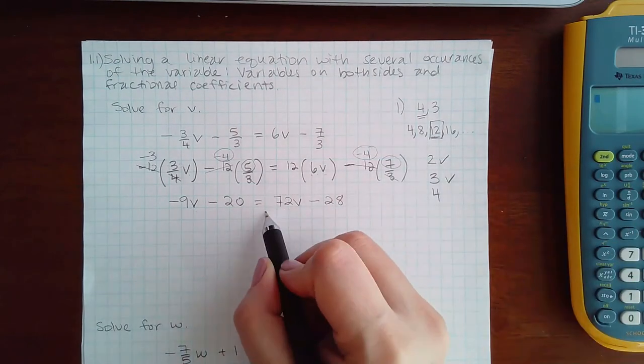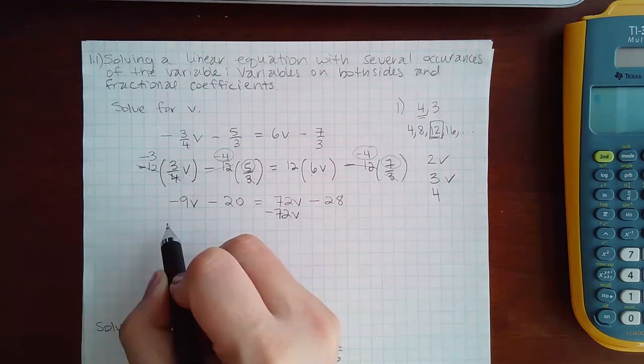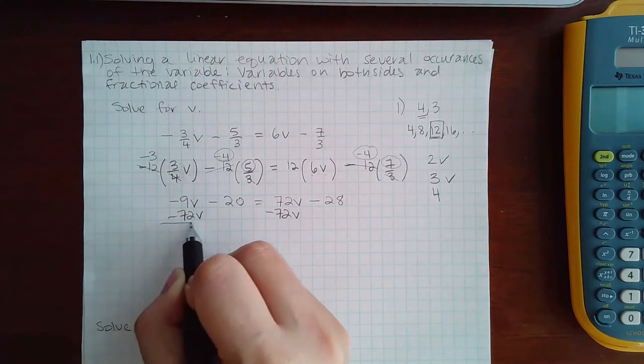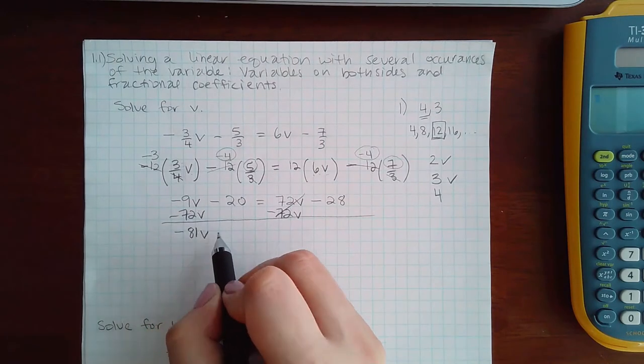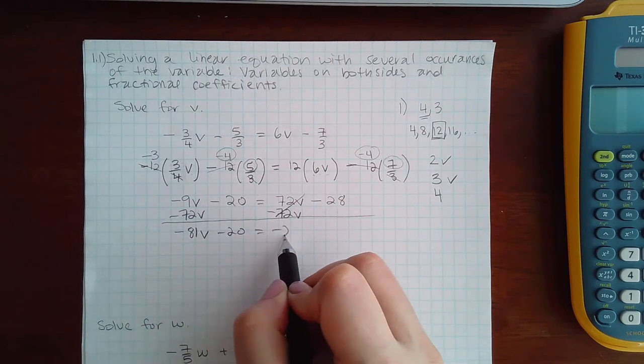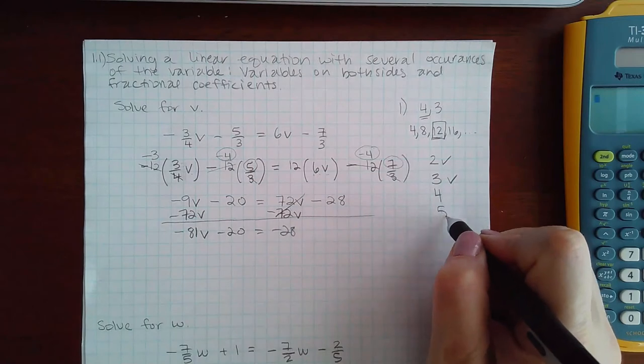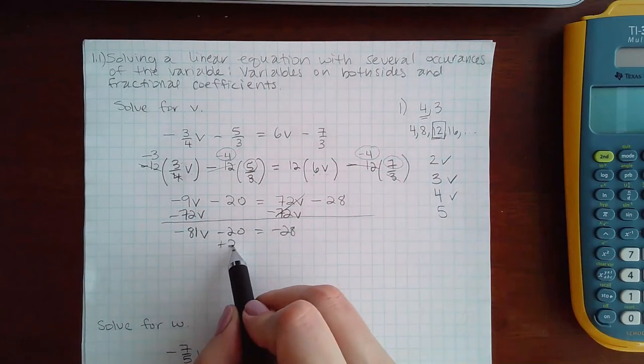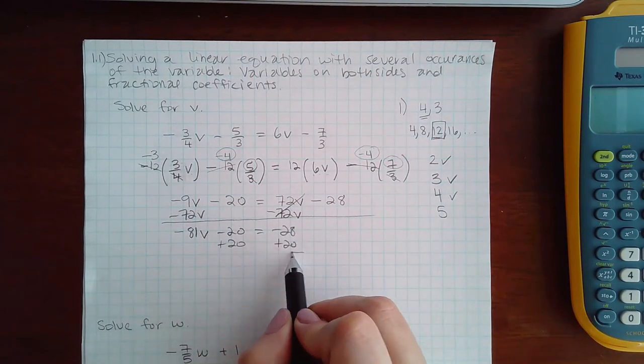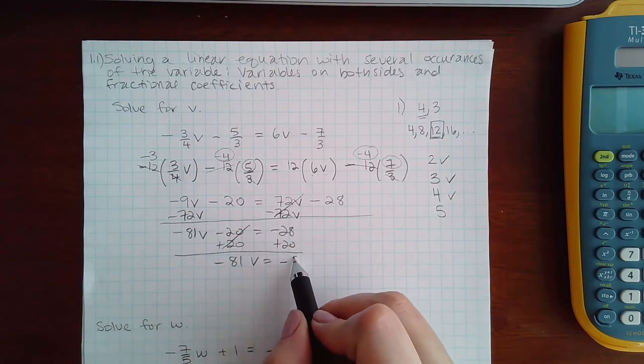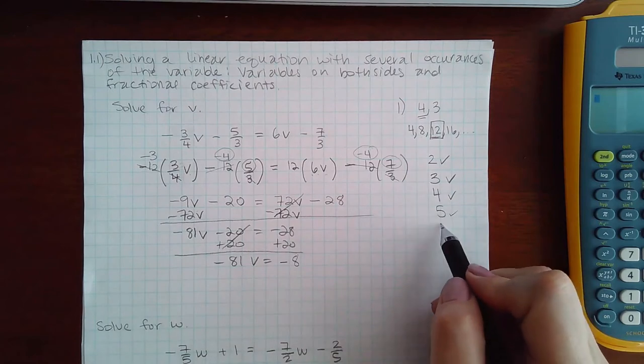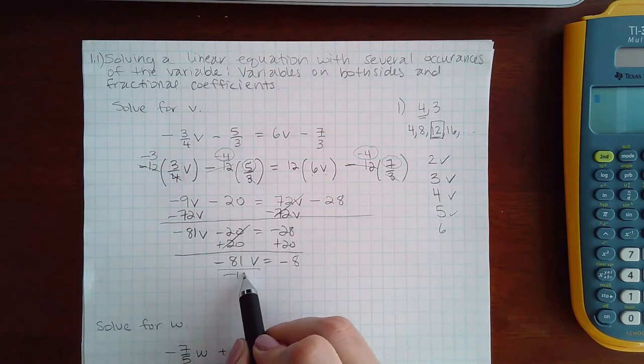Step 4 is to move this variable over to the other side, so we get negative 81v minus 20 equal to negative 28. Then step 5 is to move the constants to the right. We get negative 81v equal to negative 8.